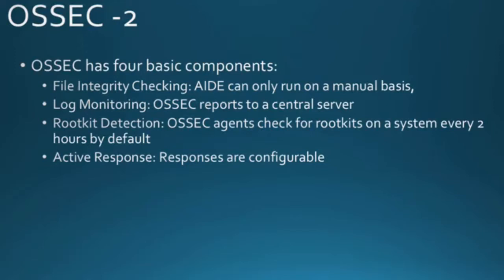OSSEC has four basic components. First, file integrity checking — AIDE only runs on a manual basis, but OSSEC does it every few hours. Second, log monitoring — OSSEC can report logs to a central server. Third, rootkit detection — OSSEC agents check for rootkits on a system every two hours, which is something AIDE cannot do.